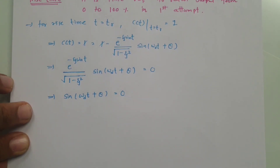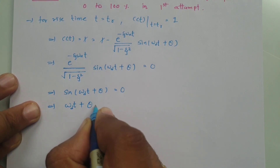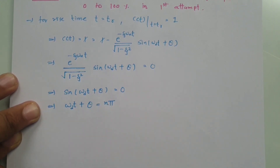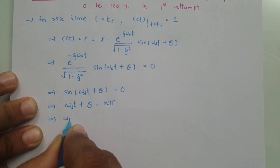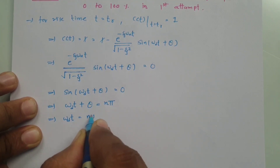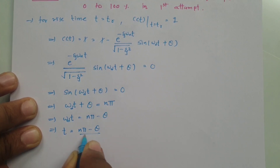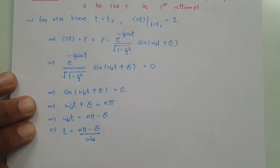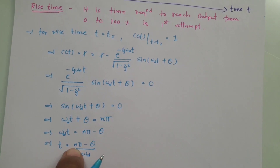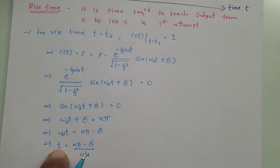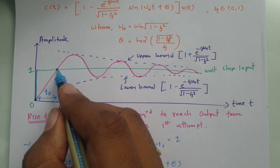Since sin(ω_d·t + θ) = 0, we have ω_d·t + θ = nπ, which gives t = (nπ − θ) / ω_d. This is a general expression for time. We need to identify at which value of n, t equals the rise time. As you can see on the graph, the output reaches 100 percent at multiple instances.